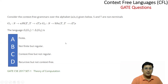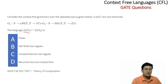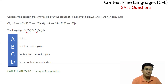We will solve some more questions on the GATE. This question gives two grammars G1 and G2, and we have to identify what language is accepted by each grammar. Then we have to find the intersection of these languages and determine whether the resulting language is finite, regular, or something else.